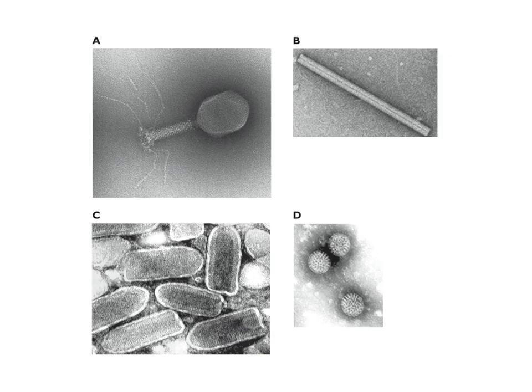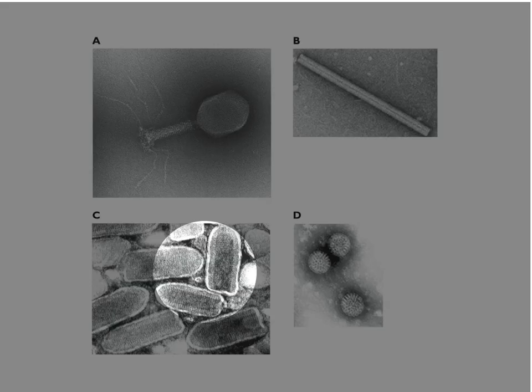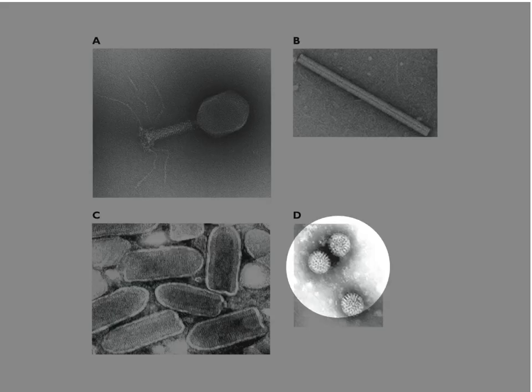In the 1930s and 40s, the electron microscope was developed. For the first time, it could be shown that these agents were particulate. Remember, they had been called slimy liquid poison because it wasn't clear they were particles. With the electron microscope we could show bacteriophages, tobacco mosaic virus — which turned out to be a rod-shaped particle — rabies virus, and rotavirus, which causes gastroenteritis.